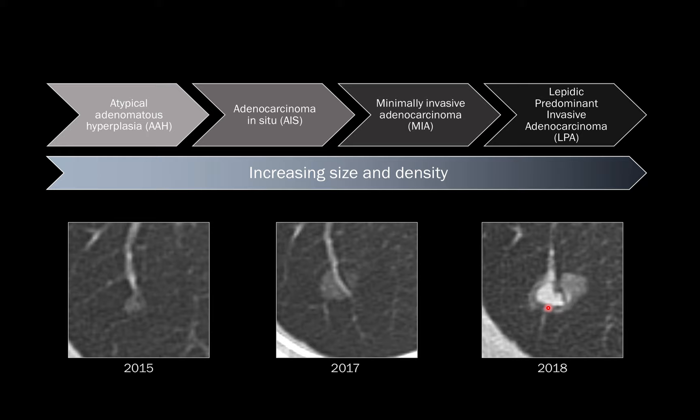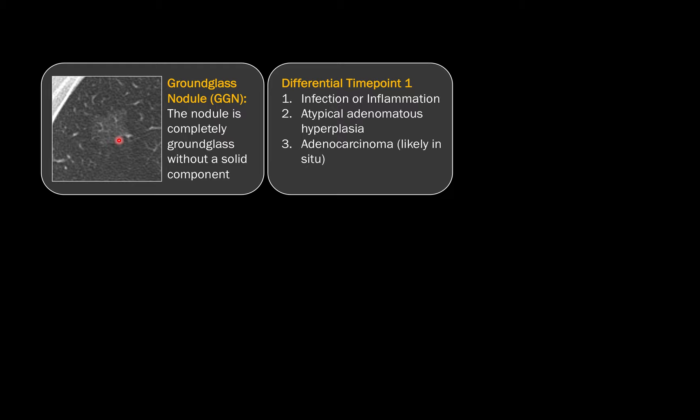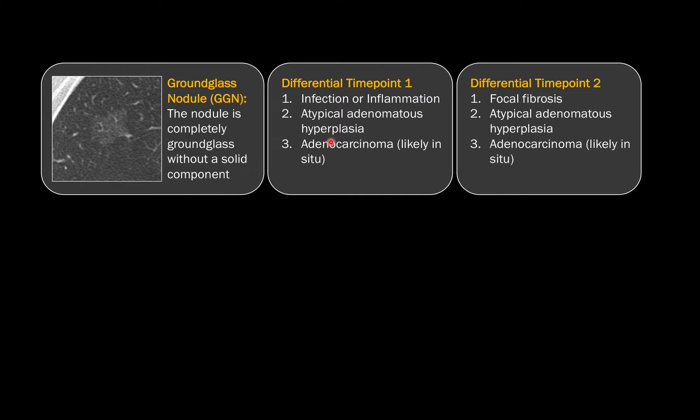For a pure ground glass nodule, at the first time point I would give a differential of infection or inflammation, atypical adenomatous hyperplasia, or adenocarcinoma — likely in situ, which I typically term low-grade adenocarcinoma. If follow-up shows the lesion is still present, infection or inflammation becomes less likely, and I would add focal fibrosis to the differential while keeping atypical adenomatous hyperplasia and adenocarcinoma.